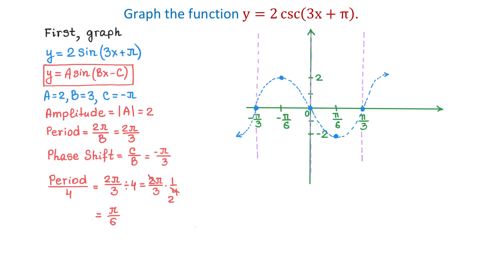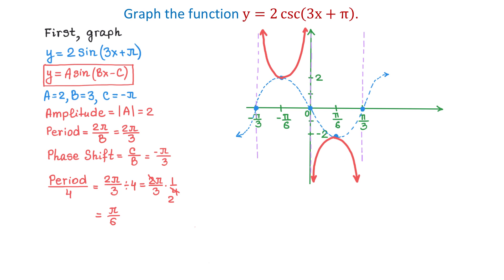Here we have 3 vertical asymptotes at negative pi over 3, at 0, and at positive pi over 3. To the left and to the right, if we continue with the graph, there will be more vertical asymptotes. Through this maximum point, we will have a U-shaped graph that opens up and approaches these vertical asymptotes. Through this minimum point, we will have another portion of the cosecant function that opens down and approaches these vertical asymptotes. Here we have the graph of the cosecant function, and this pattern will continue to the right and to the left indefinitely.